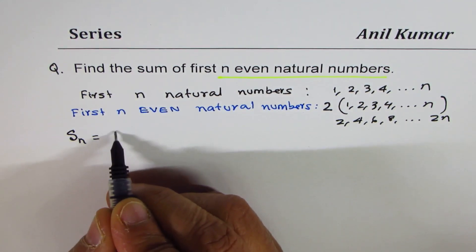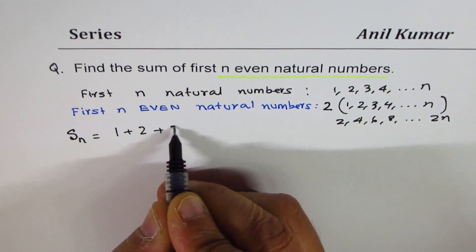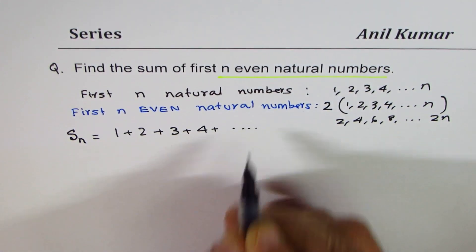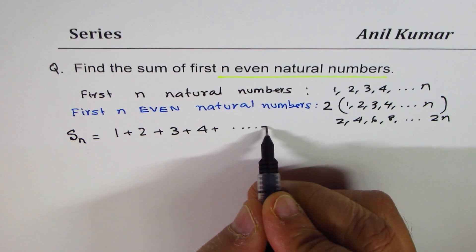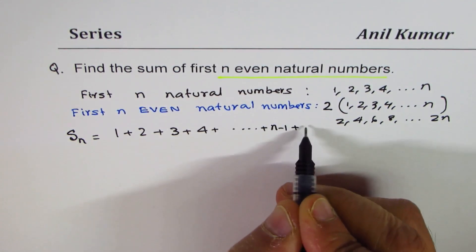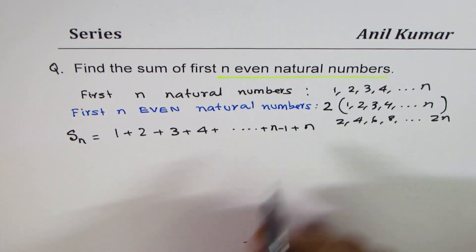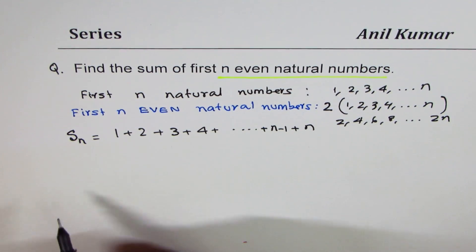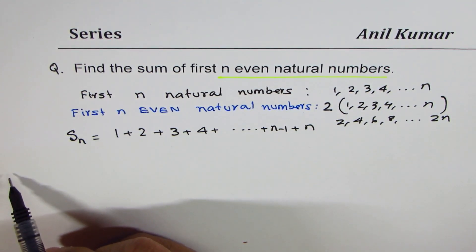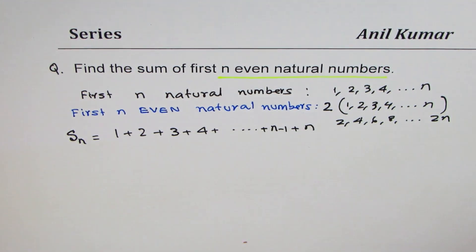Let S_n be the sum of the first n natural numbers. That is, S_n = 1 + 2 + 3 + 4 + ... + (n−1) + n. So these are my n numbers and we will try to find the sum of these numbers.